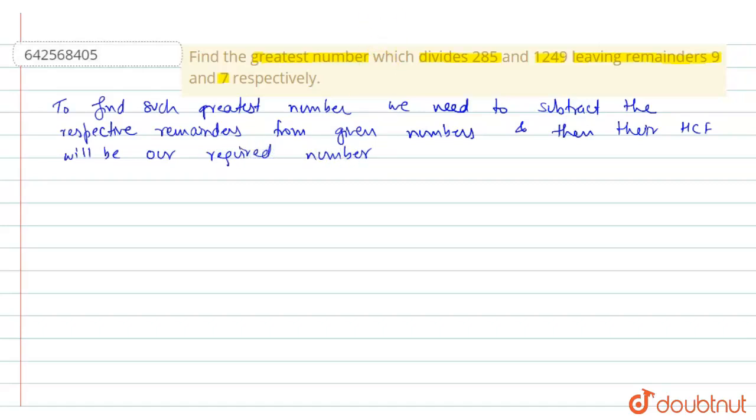This is the approach we are going to use here. For 285, we get 285 minus 9, which is equal to 276, and 1249 minus 7, we get 1242.